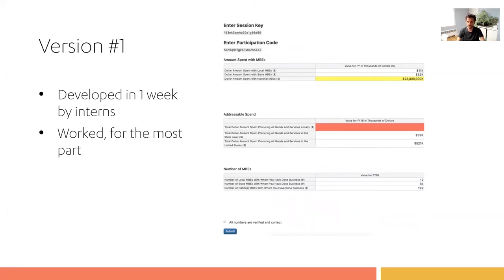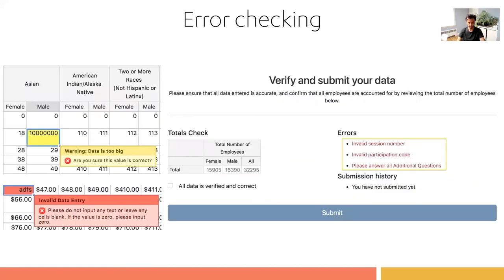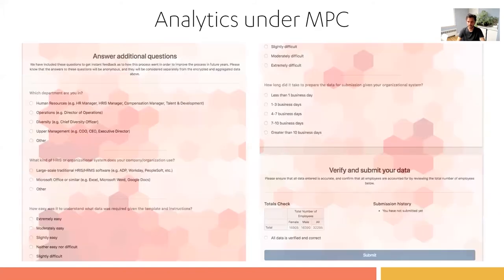So we built our own web-based platform. Version 1 was not very great — it worked for the most part but had problems with data validation. We're now on version 3, which has been user-tested: we've done user studies using Mechanical Turk, A/B testing, and we've tried to make it as seamless as possible — people only have to click a link, drag and drop their spreadsheet, and they're participating in the computation. It has extensive error checking and validation on the front end. We also built analytics under MPC — we could have used Google Analytics, but we wanted the same level of privacy, so we built tools like a heat map computed under MPC to improve platform usability.